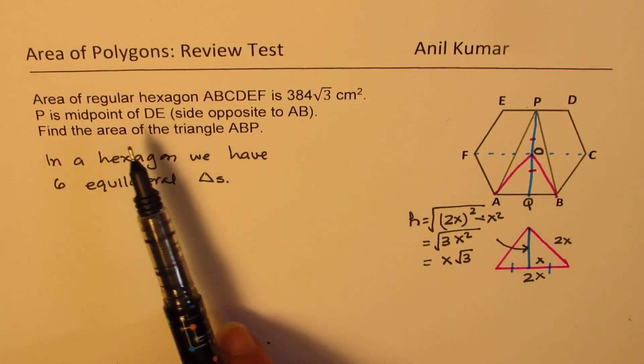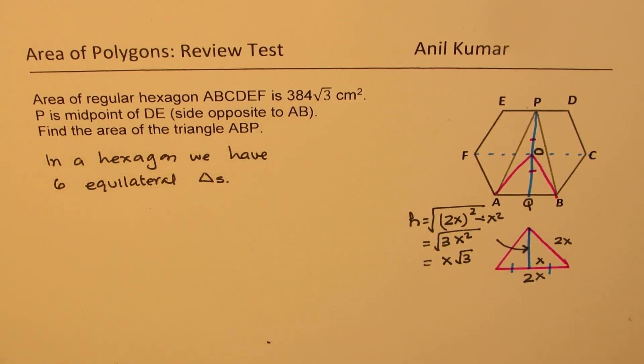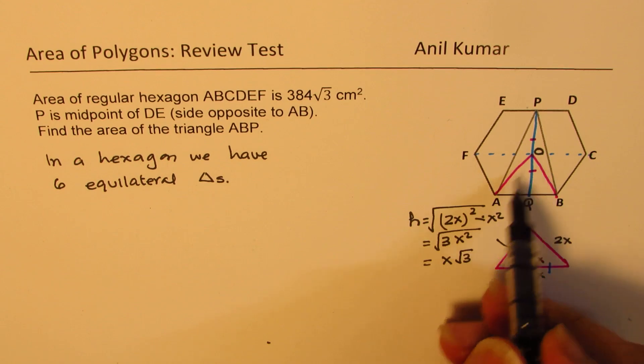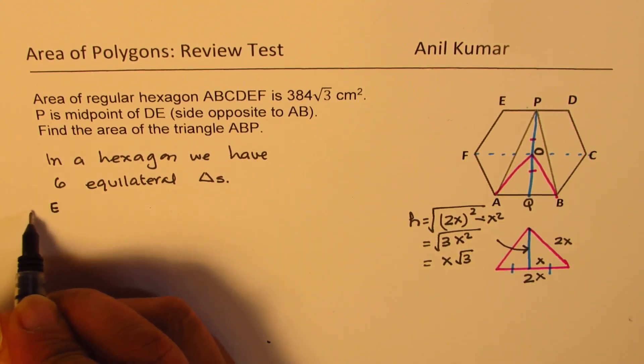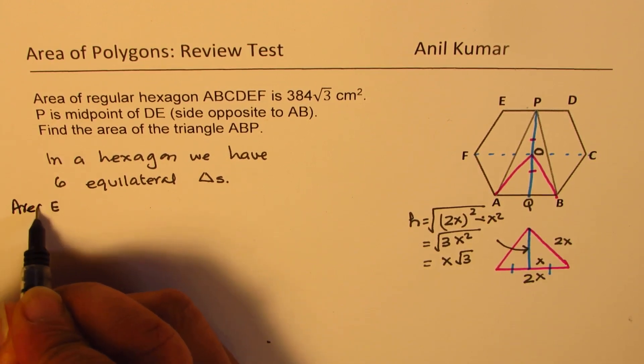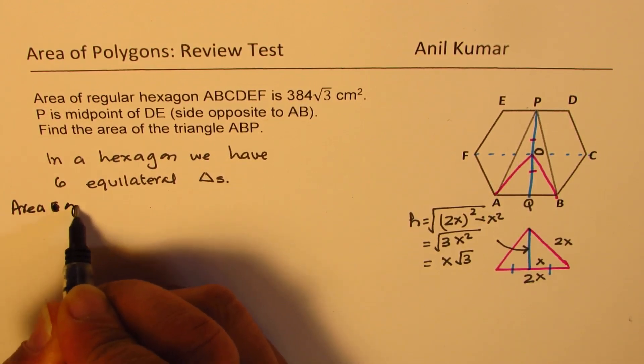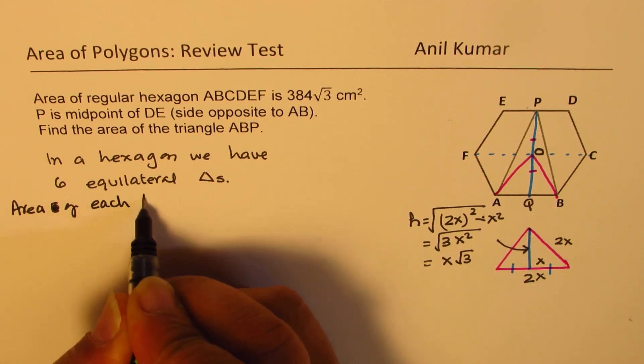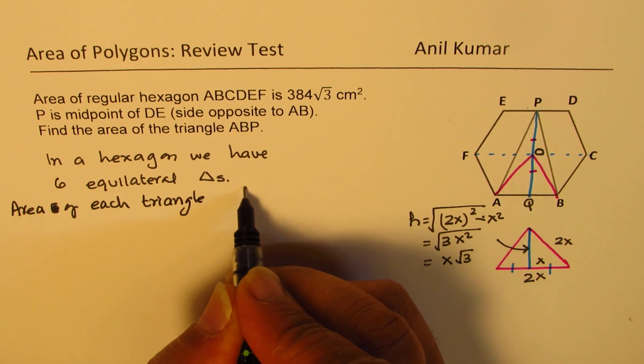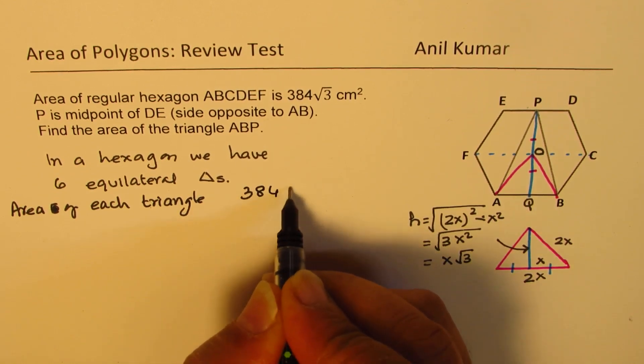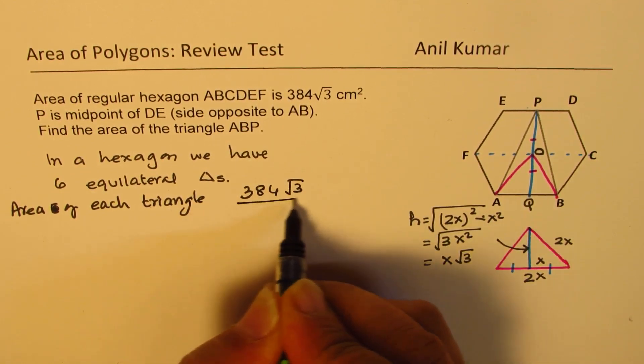Since we are given area of the whole hexagon, we can actually find area of each triangle. Let me write area of each triangle. We will be given area 384√3 divided by 6.